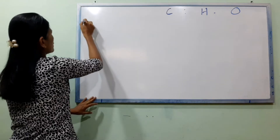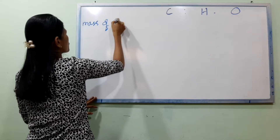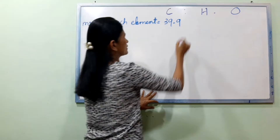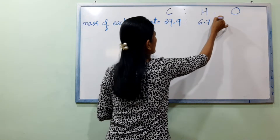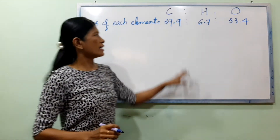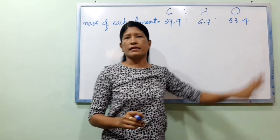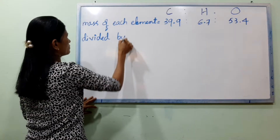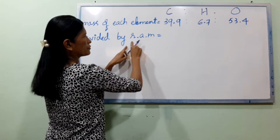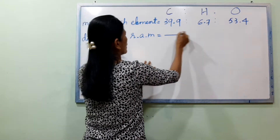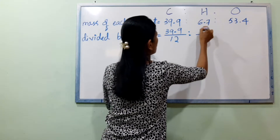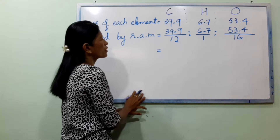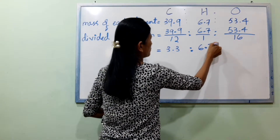In the empirical formula, the mass of each element is given. The mass of each element is: carbon 39.9%, hydrogen 6.7%, and oxygen 53.4%. These are divided by their relative atomic mass. Carbon's atomic mass is 12, hydrogen is 1, and oxygen is 16. So for carbon: 39.9 divided by 12 gives approximately 3.3. Hydrogen: 6.7 divided by 1 gives 6.7. Oxygen: 53.4 divided by 16 gives approximately 3.3.